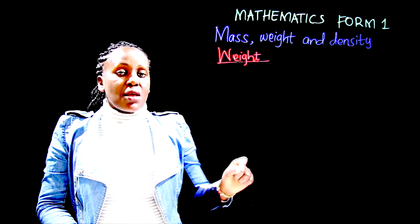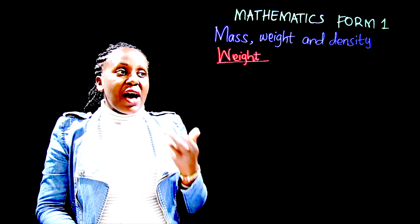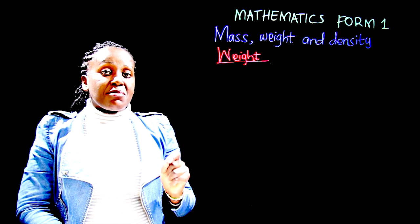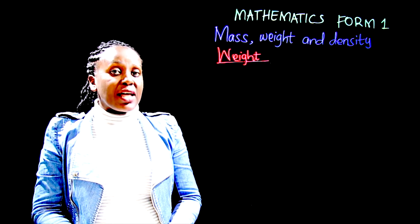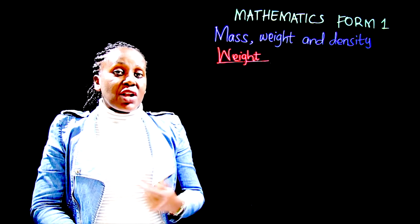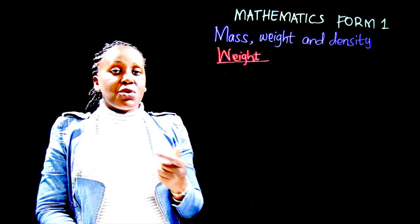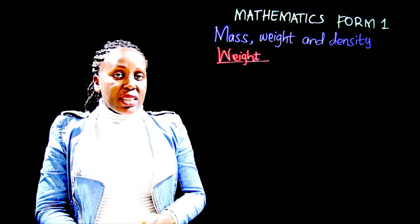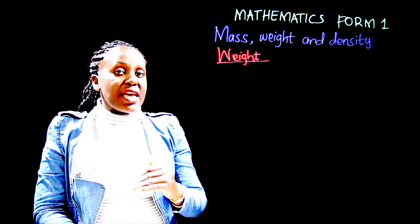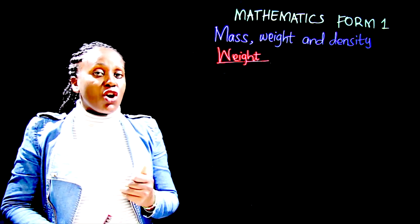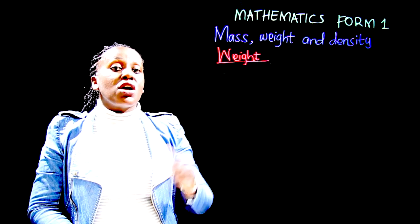Both mass and weight describe how heavy an object is, but weight is influenced by gravity. The pull of gravity keeps us on the surface of the Earth, which is why we cannot float. Astronauts can float on the moon because the gravitational pull there is less than on Earth. The gravitational pull on Jupiter is the highest, so you would weigh the most there. Weight is related to mass but also influenced by a planet's gravitational pull.